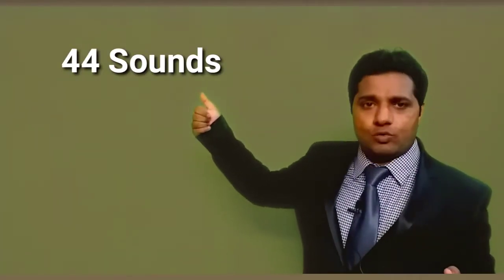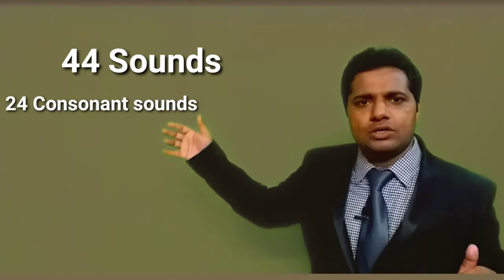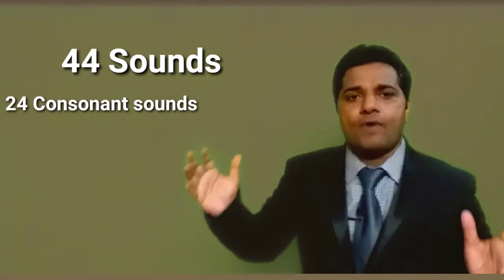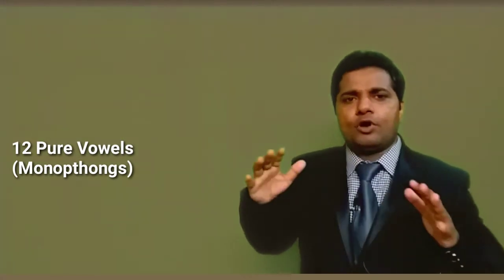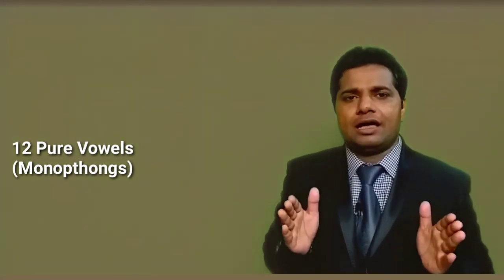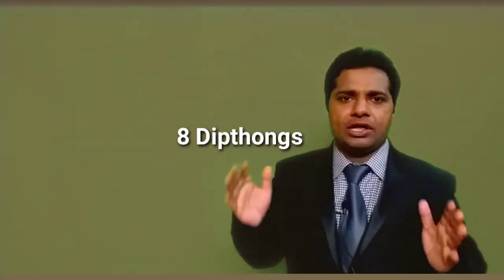It has got 44 sounds. If you divide these 44 sounds, there are 24 consonant sounds and 20 vowel sounds. In 20, you have got 12 pure vowels—also called monophthongs—and you've got eight diphthongs. This is the structure of English phonology sounds.